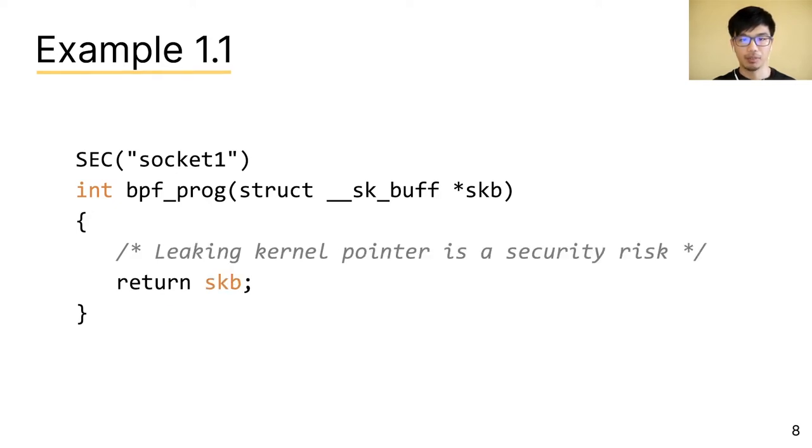Now, if we have another program that returns the socket buffer pointer instead of zero, the verifier will reject because an integer is not the same type as socket buffer pointer. But before the verifier can reject our code, the compiler will usually first complain.